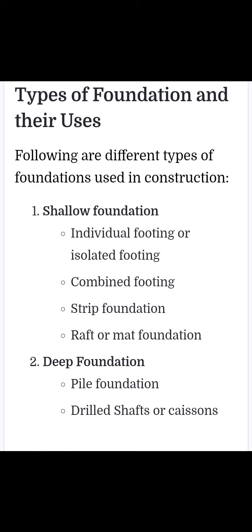Deep foundation categorizes two types: pile foundation and caisson foundation. Pile foundation is defined as one in which the load is transferred to a deeper depth. Piles are cylindrical members made up of steel, concrete, or RCC, driven into the ground to a deeper depth. Classification of pile according to transmission of load: friction pile, cohesion pile, and combination of friction and cohesion pile.